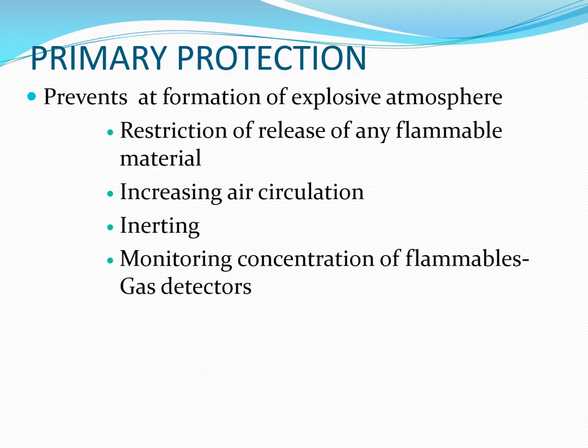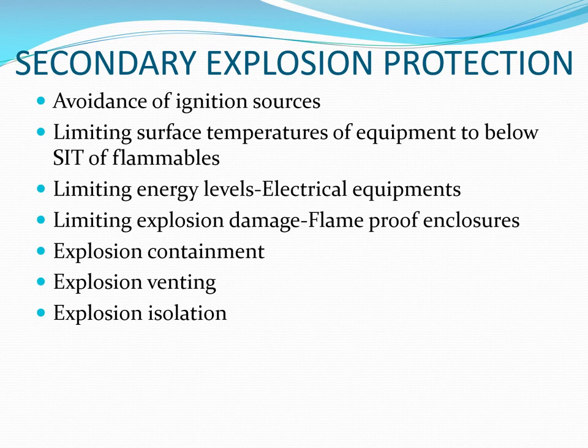Primary explosion protection aims at preventing the formation of an explosive atmosphere. This can be achieved by avoiding or restricting the release of any flammable material, increasing air circulation by natural or artificial ventilation to keep flammable concentrations below the LFL (lower flammability limit), inerting by adding nitrogen or carbon dioxide, and monitoring concentrations of flammables through gas detection systems.